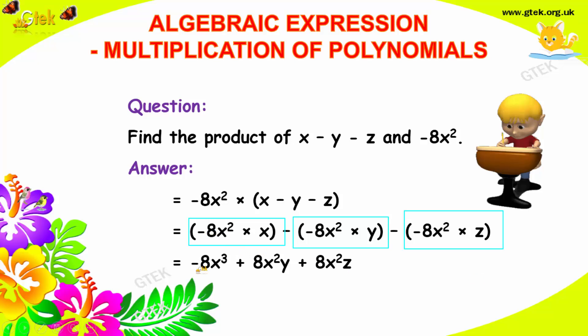Now, you got minus, minus here, 8x³ here. Minus into minus, it will become plus 8x²y. Minus into minus plus, 8x²z. So, this is how you have to identify.